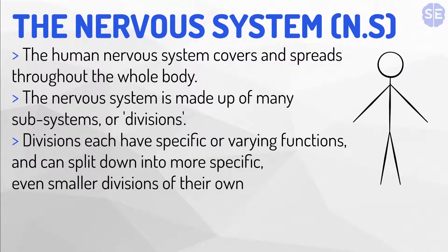The nervous system covers and spreads throughout the whole body — 100%, the nervous system covers it. The nervous system is made up of many subsystems, or divisions. Divisions each have specific or varying functions, and can be split into more specific, even smaller divisions of their own.